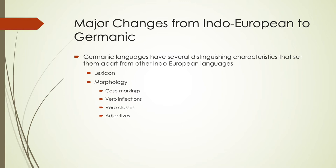We'll look at things like case markings, different verb inflections, what verb classes existed, and the uniqueness of Germanic languages with their adjectives. We'll also talk a little bit about semantics and meaning, and then the next lecture is when we'll get to phonology.